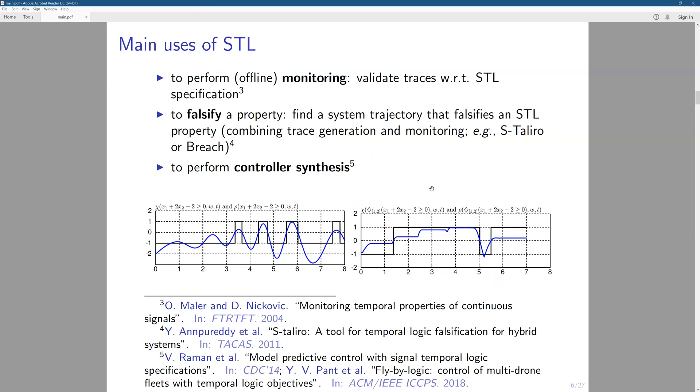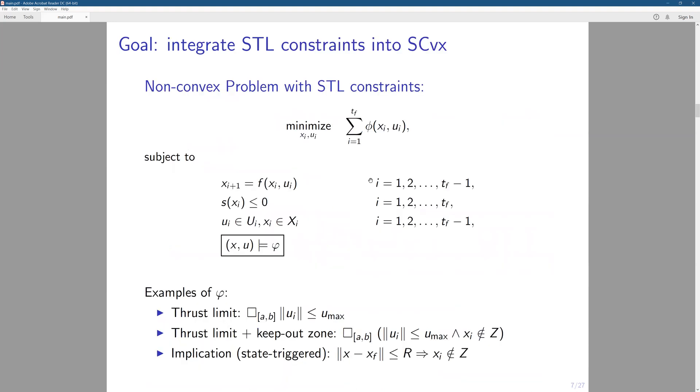So here we have some general applications for the STL and we have seen that in the literature. So the first one, it can be used to perform offline monitoring and it can also be used to falsify property, which means that we want to find a trajectory that makes the system or the STL properties fail. And also the main focus of our project is to perform control synthesis. So essentially we want to use STL as part of the constraint, which is in addition to the previous problem, we have this additional STL constraint added to the problem.